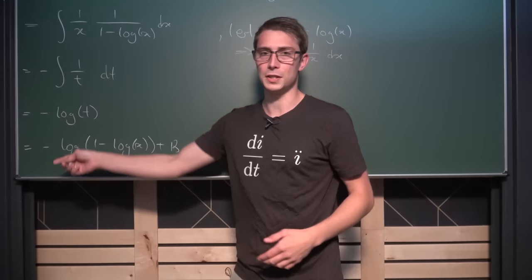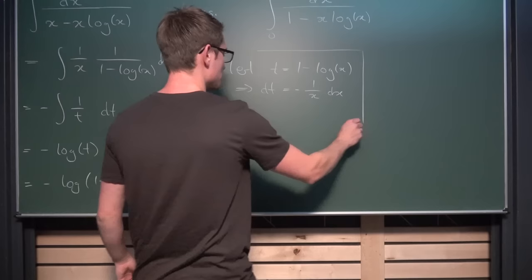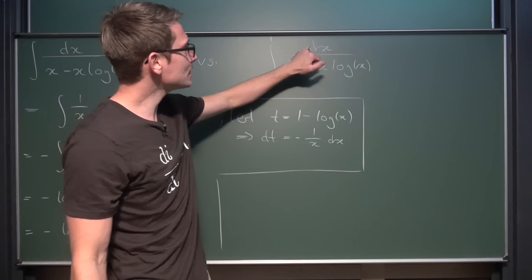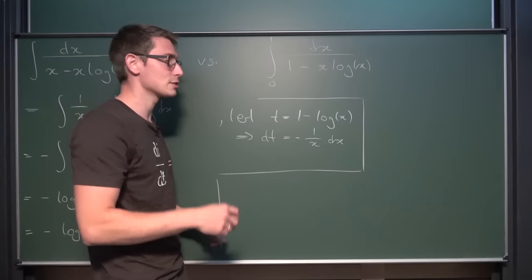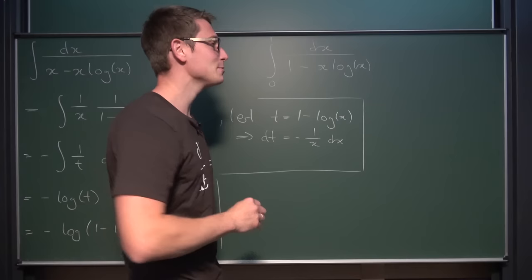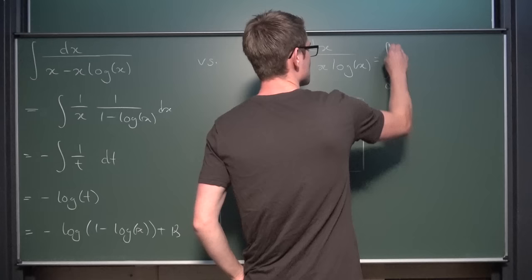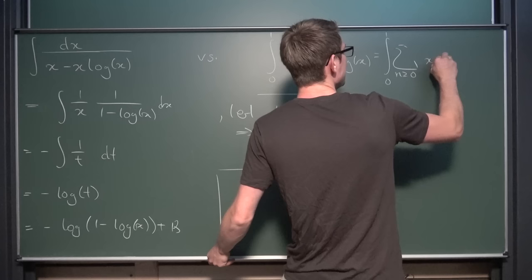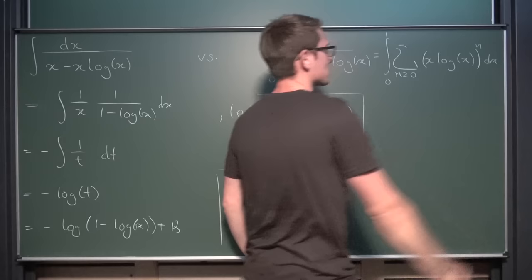Now let us go for the other integral. For this one it's a bit different because we don't have a common factor down here in the denominator. But what you might notice is that this thing here is of the form 1 over 1 minus something. And if it's in the radius of convergence, namely from 0 to 1, we can make use of the geometric series here, turning all of this into the integral from 0 to 1 of the sum where n ≥ 0 of x times log of x to the nth power dx. This looks different but it's a pretty good form to work with.